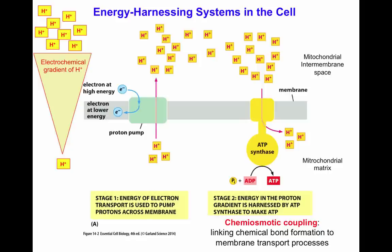As a way to review, we're going to look at the energy harvesting systems in the cell. Proteins in the inner membrane of the mitochondria will undergo redox reactions to pass electrons from one member of the protein complex to another. The energy of those electrons will be used to transport protons from the mitochondrial matrix to the mitochondrial intermembrane space, generating an electrochemical gradient for protons that will be used by ATP synthase to generate ATP.